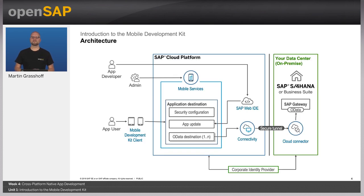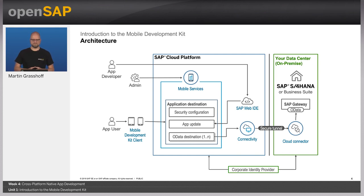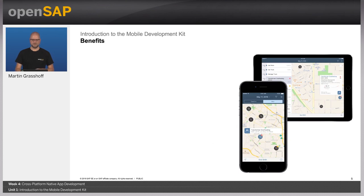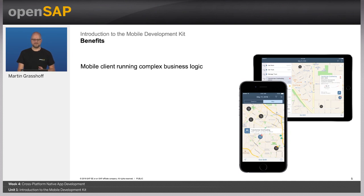The architecture is very similar to what we have seen in Mobile Cards. We have the back-end system, Mobile Services, and the editor at design time in the Web IDE. What comes on top is that we need the so-called app update feature of Mobile Services to store the actual application data and then distribute it to the clients on the devices. Additionally, MDK can run complex business logic locally on the device — if you are in offline mode and want to execute local business objects, you have a way of doing so.